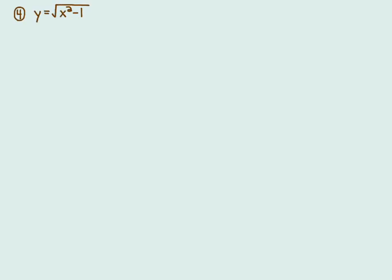This is the last video for this extraordinarily long section. I'm going to do two more examples for you. Example number four: y equals square root of x squared minus one. Now the x squared minus one, there's no restrictions on the domain from that because that's a polynomial.